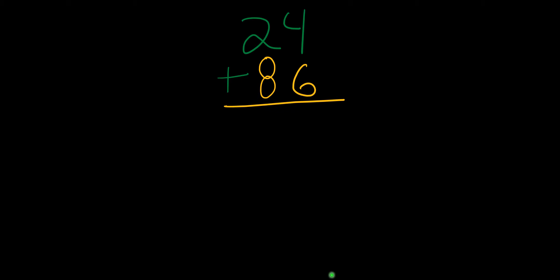In this example we have 24 plus 86. Take a break and see if you can figure this one out. Let's go over it. So the first thing I'm going to do is add 6 plus 4. 6 plus 4 is 10. So I'm going to put the 0 and then I'm going to carry the 1.